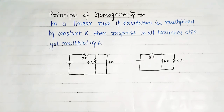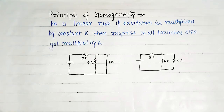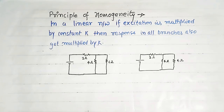Welcome to my YouTube channel. In this lecture we will understand the principle of homogeneity. The statement of homogeneity is: in a linear network, if excitation is multiplied by constant k, then the response in all branches of the network also gets multiplied by k. We can understand this concept by taking an example of a circuit.